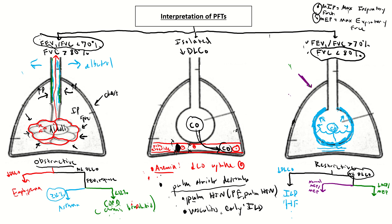Extrapulmonary causes of restriction with normal MIP/MEP include obesity, kyphoscoliosis, chest wall disorders, and pleural effusion or bilateral pleural fusion. These decrease the patient's ability to take a full breath, but their diaphragm and neuromuscular function are intact, so maximum inspiratory and expiratory force are normal.